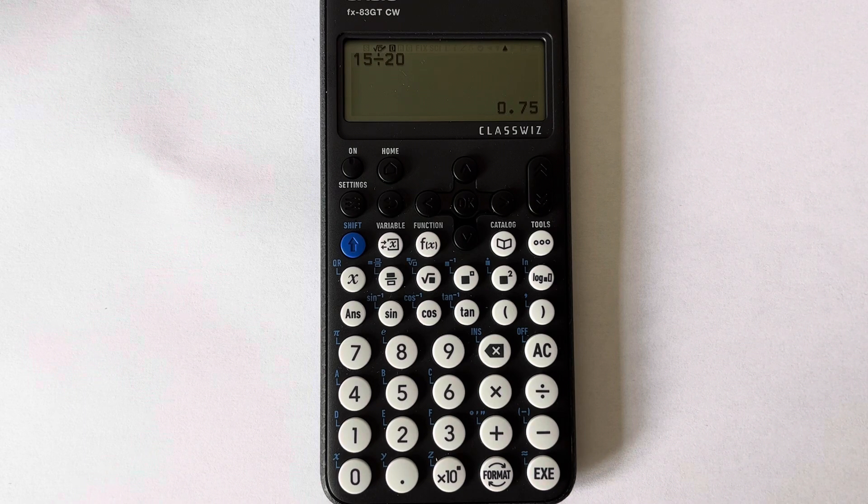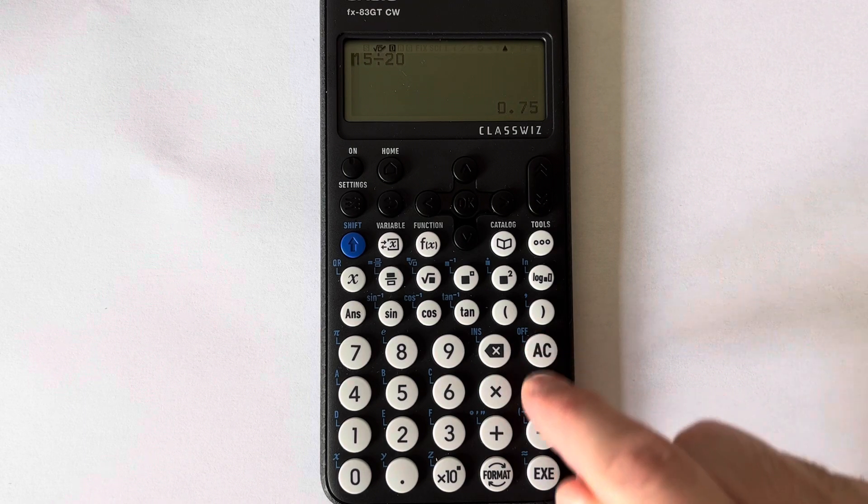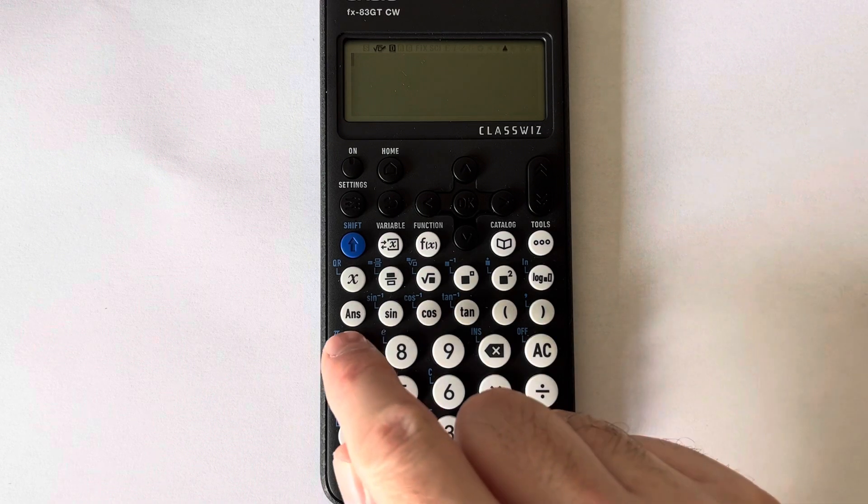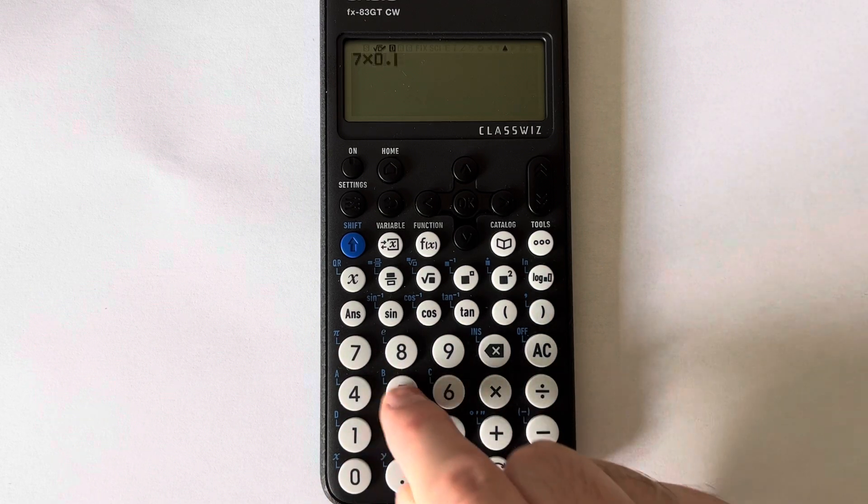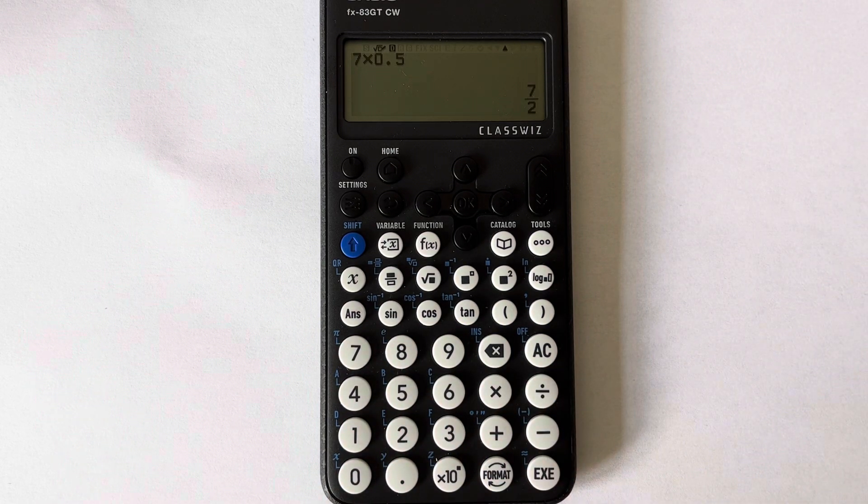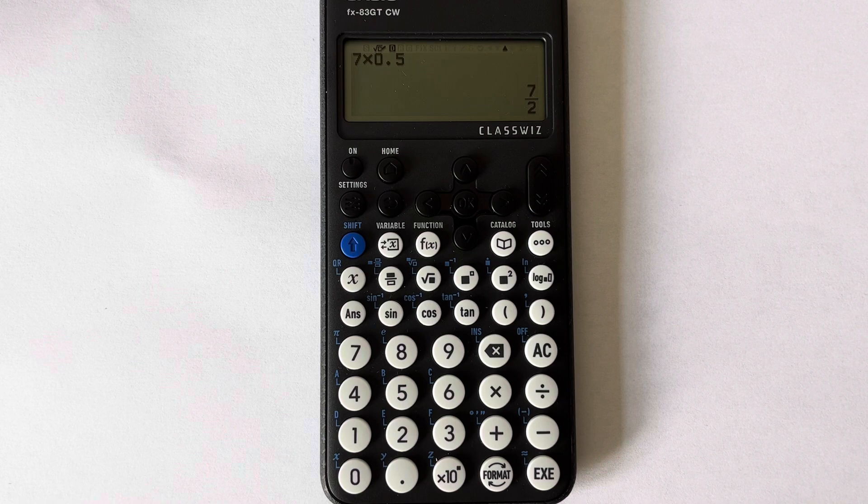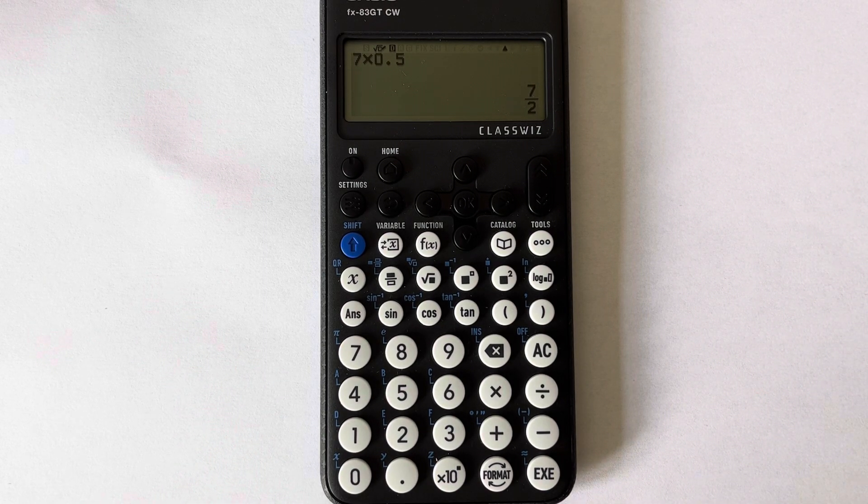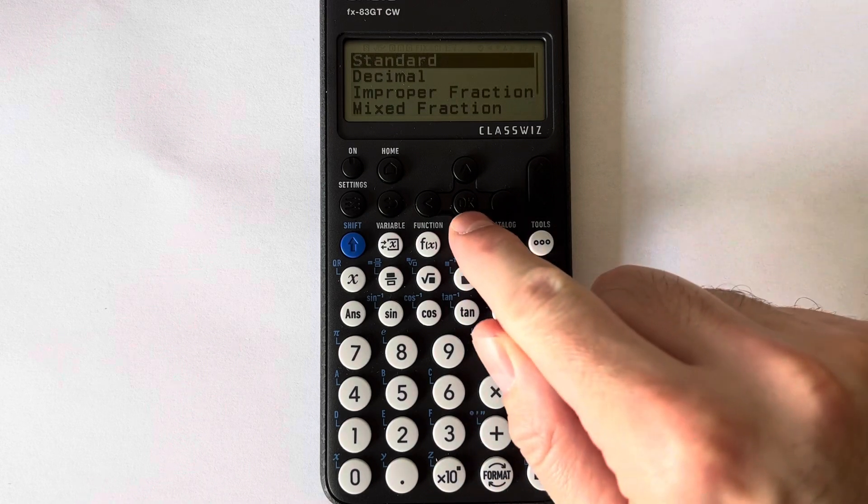So let's do one more example. This time let's work out 7 times 0.5. So 7 times 0.5. Again, the calculator is showing a fraction, so if you want it as a decimal, press format, scroll down to decimal.